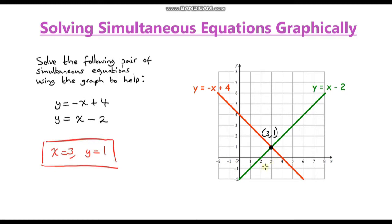Let me explain why that is the case. Anything on this green line would satisfy this equation — for example, when x equals seven, y equals five, because seven minus two is indeed five. Anything on the red line would satisfy the other equation. So the only point that satisfies both equations is the point of intersection, which lies on both lines.